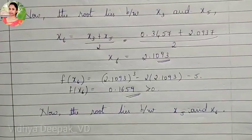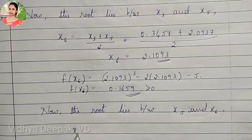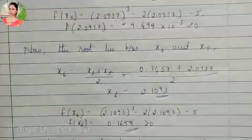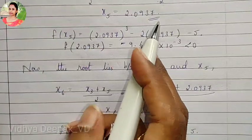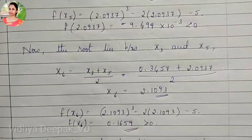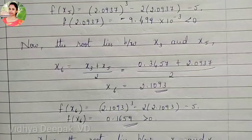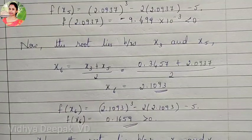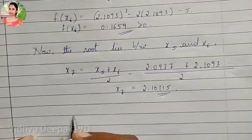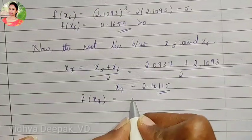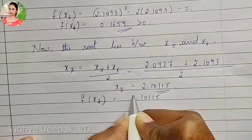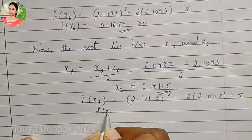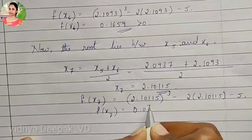Since the root lies between x5 and x6, x7 equals x5 plus x6 divided by 2. x5 is 2.0937 and x6 is 2.1093, divided by 2, giving x7 equal to 2.10115. Now we find f of x7: 2.10115 cube minus 2 into 2.10115 minus 5, giving f of x7 equal to 0.0733, which is greater than 0.